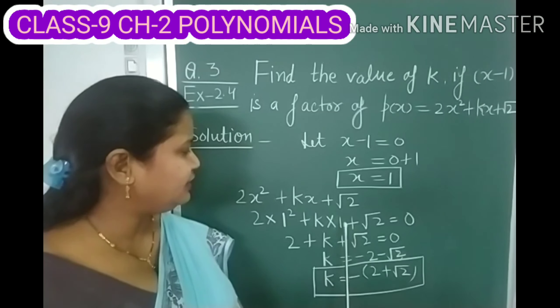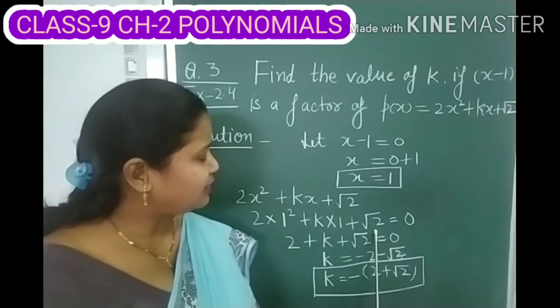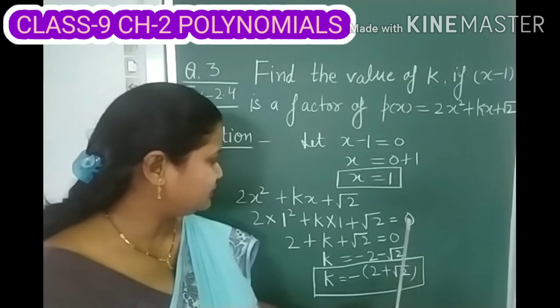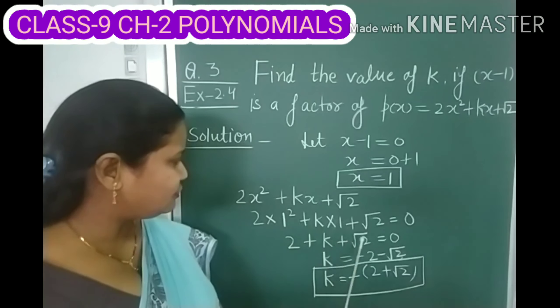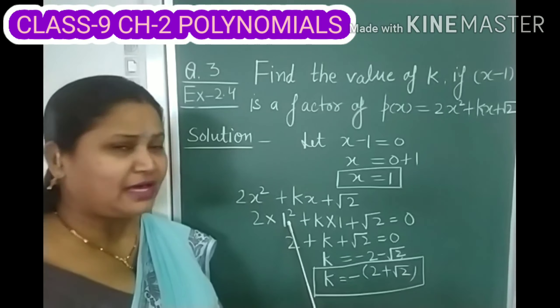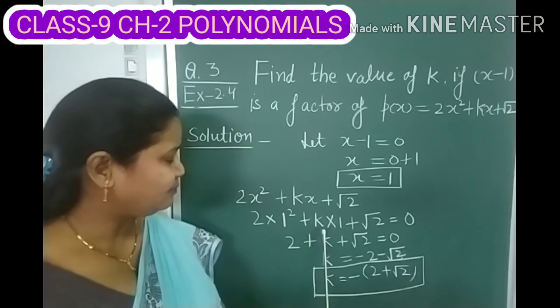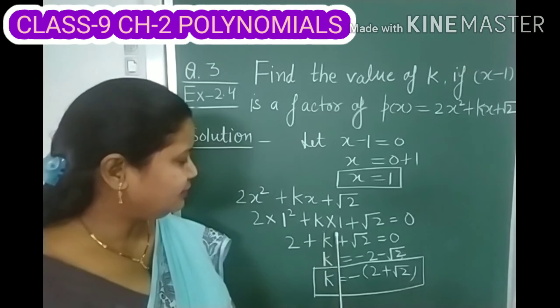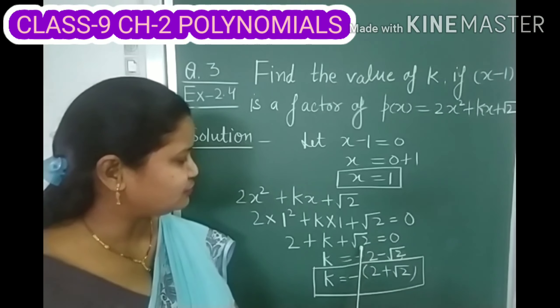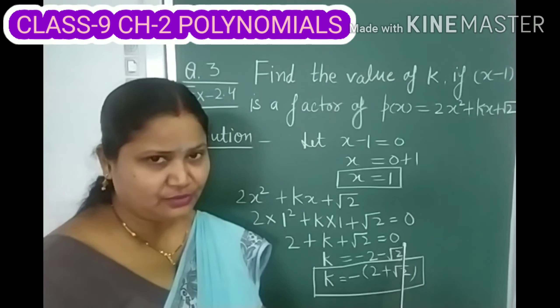And substitute 1 in place of this X. Then it becomes K into 1 and keep this root 2 as it is and equals to 0. Now solve it further, this 1 square will become 1 and 2 multiplied by 1 becomes 2. K multiplied by 1 becomes K and this root 2, write it as it is equals to 0.